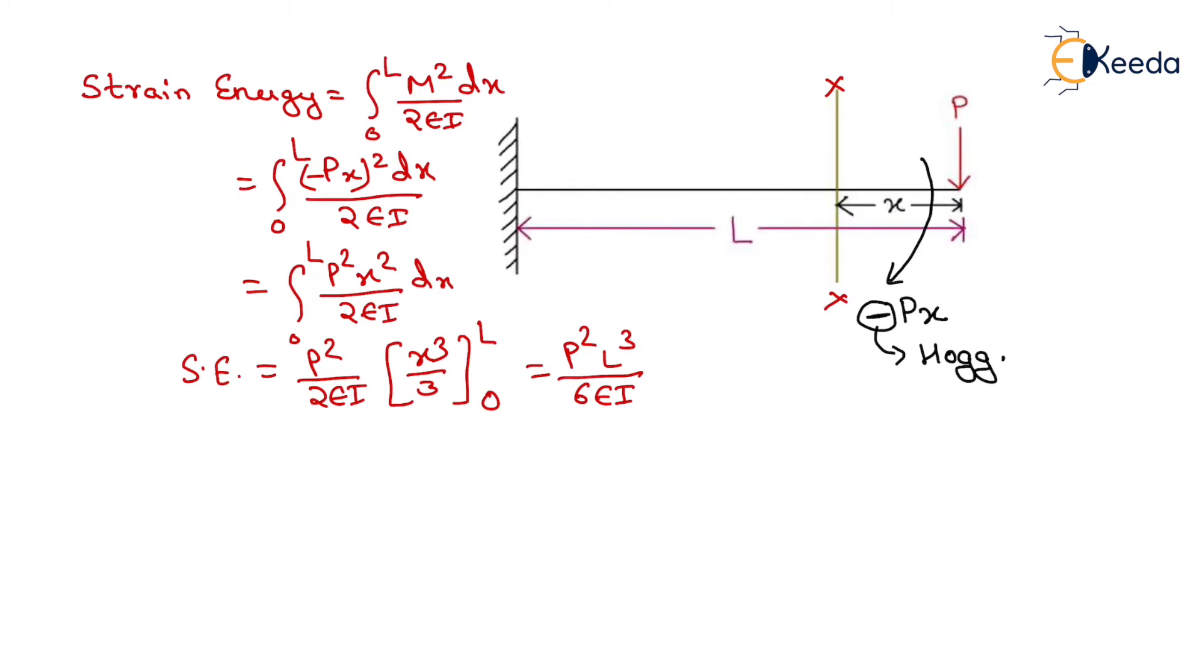We know that from the strain energy method that the external work done will be equals to the internal strain energy. So, we just put the equation that is half P into delta will be equals to total strain energy of the structure that is P square L cube upon 6EI.